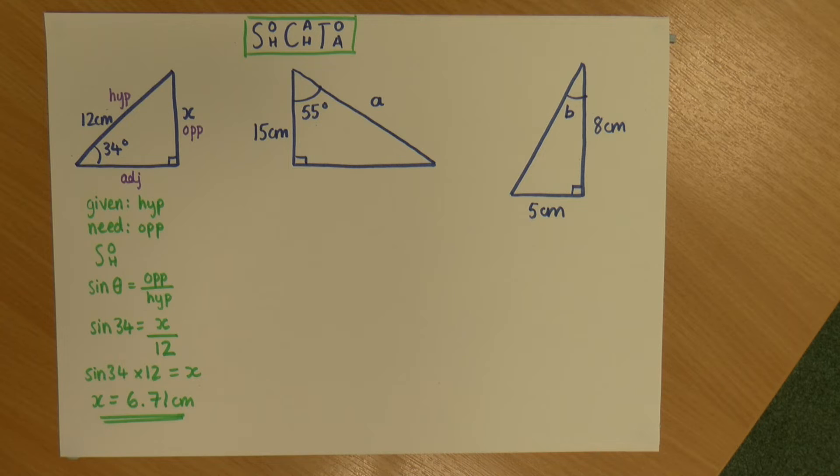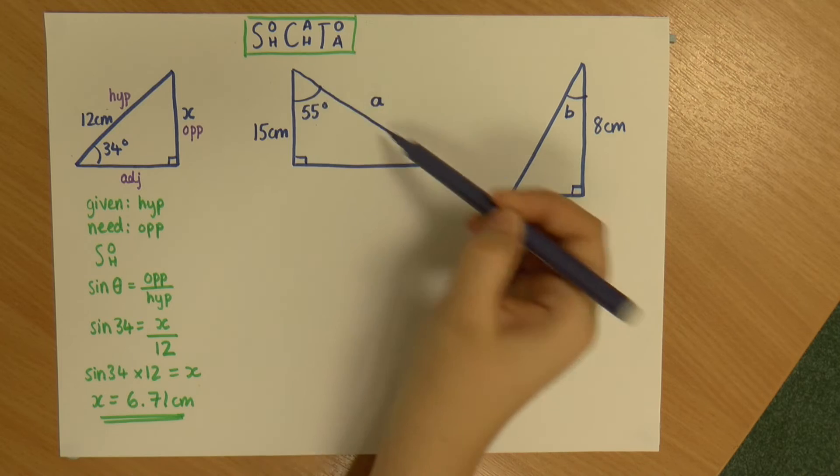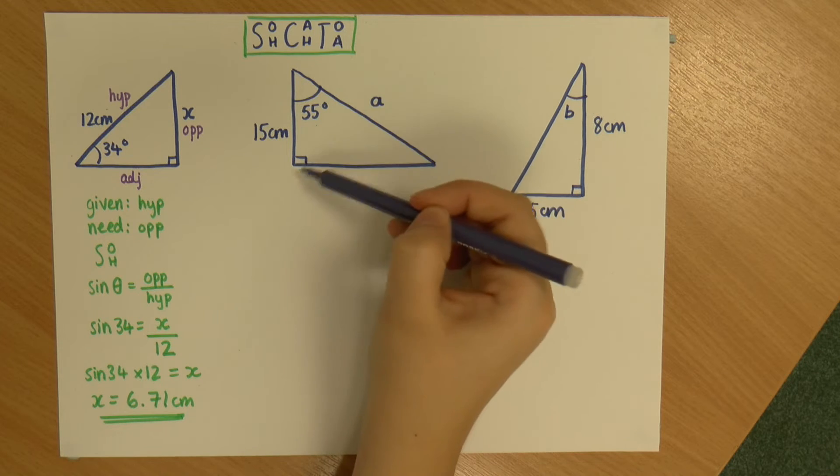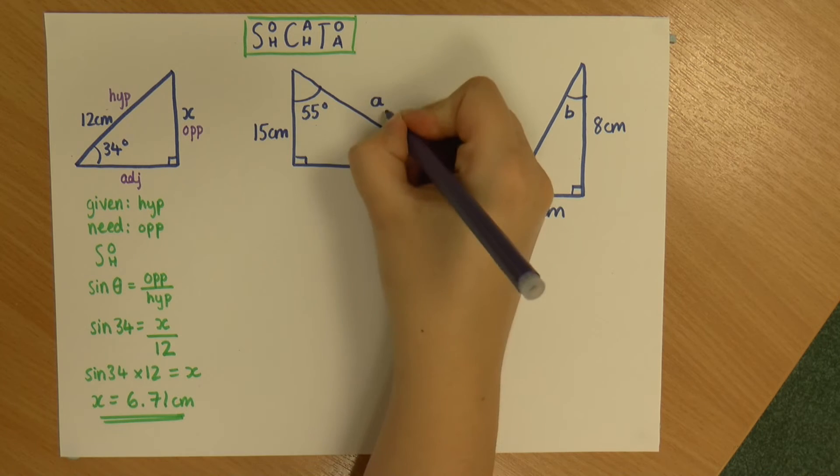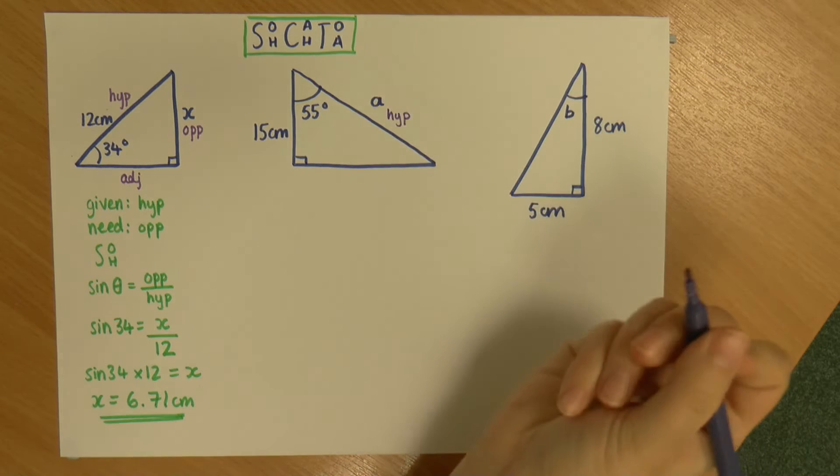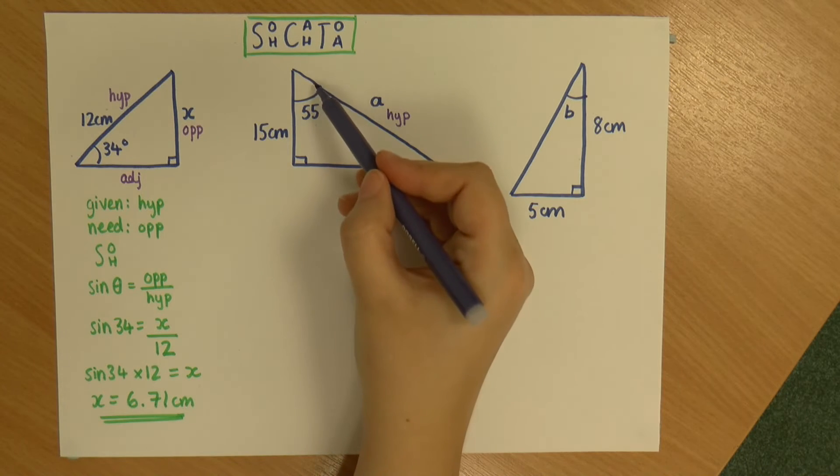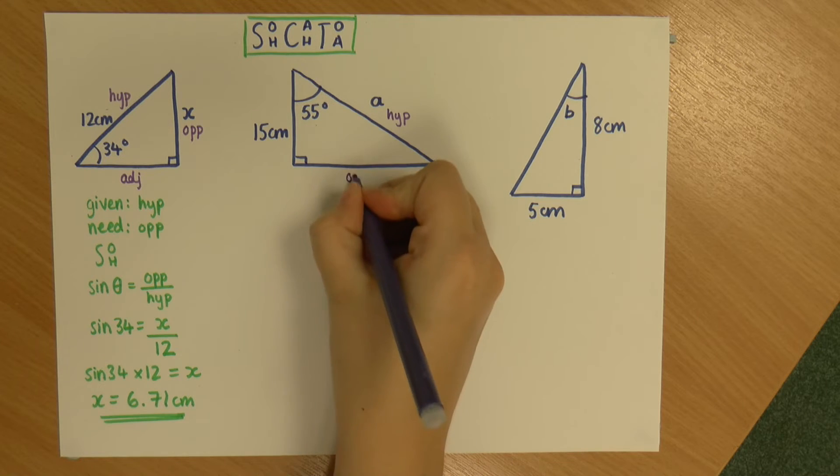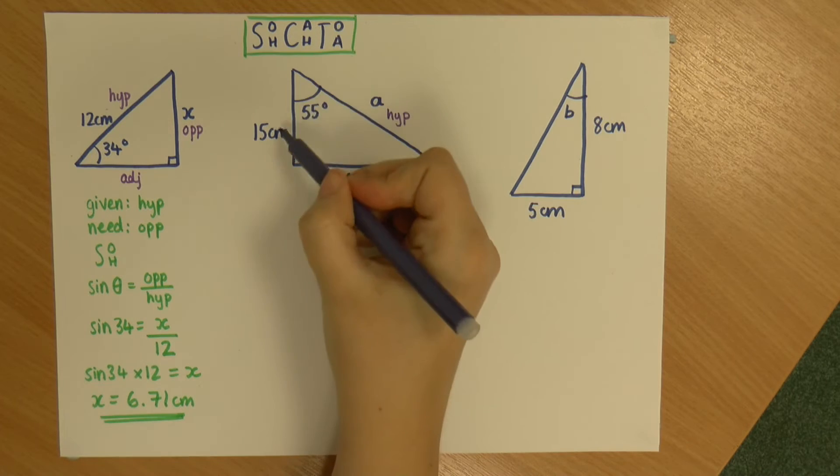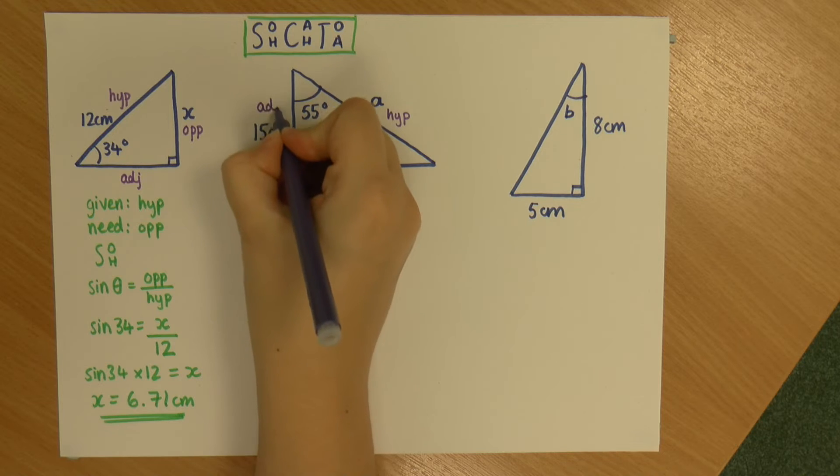Now for the middle triangle. So again, the first thing I'm going to do is identify my hypotenuse opposite and adjacent. So my hypotenuse is the long diagonal opposite the right angle. So this is my hypotenuse. My angle is here. So my opposite is the side opposite it, which is this one. And my adjacent is the side next to it, which is this one.